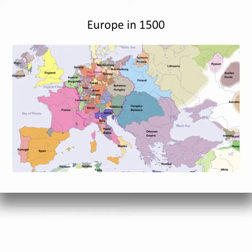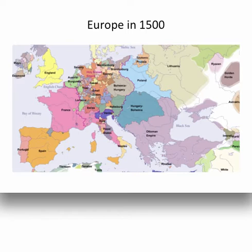Looking at the center of the map and at Italy, you see that the area now known as Germany was officially known in 1500 as the Holy Roman Empire. It did have an emperor, but it was really a very loose confederation of small states and principalities ruled over by princes, lords, kings, and sometimes even by bishops of the Catholic Church. In Italy, there was no unified Italy in 1500 — a patchwork quilt of smaller states, the largest of which in the center is called the Papal States, ruled over by the Pope.